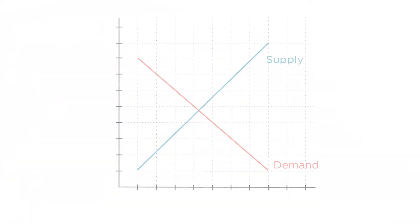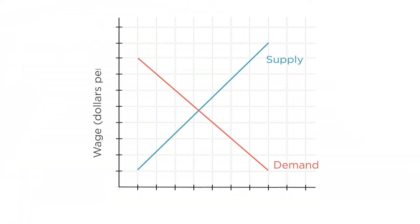Now that we've derived the supply of labor and the demand for labor, let's put them together to model the market equilibrium. Here's our standard supply and demand graph, with price of labor or wage on the vertical axis and quantity of labor or number of hours on the horizontal axis.